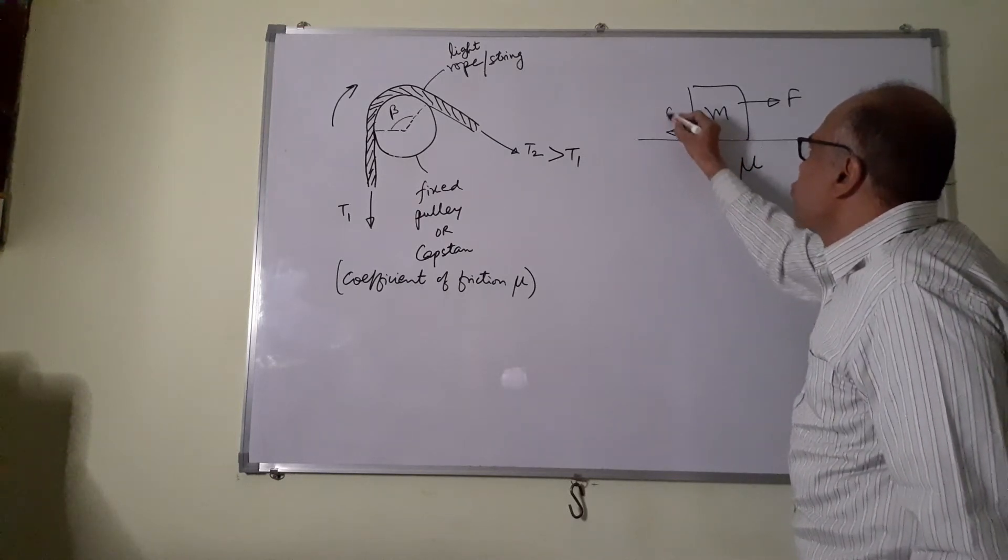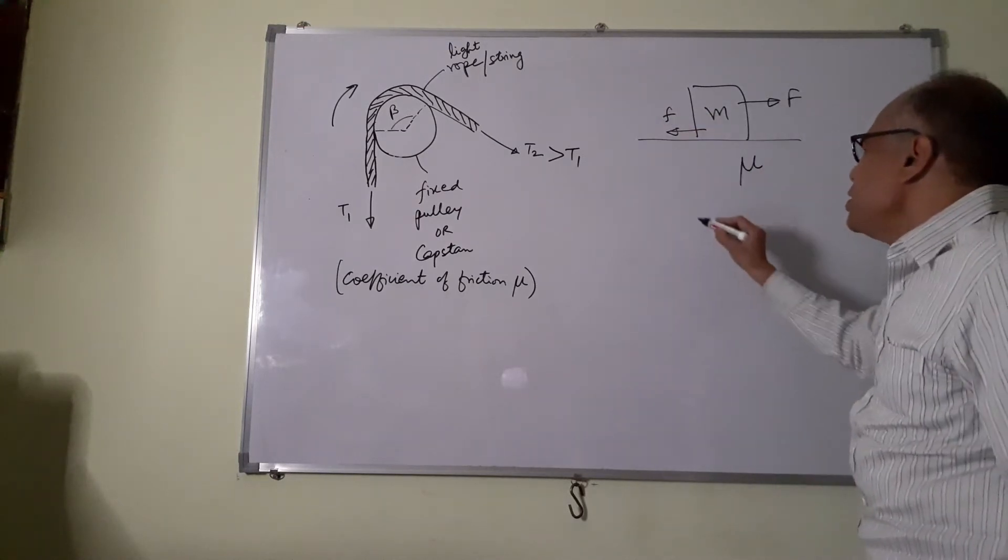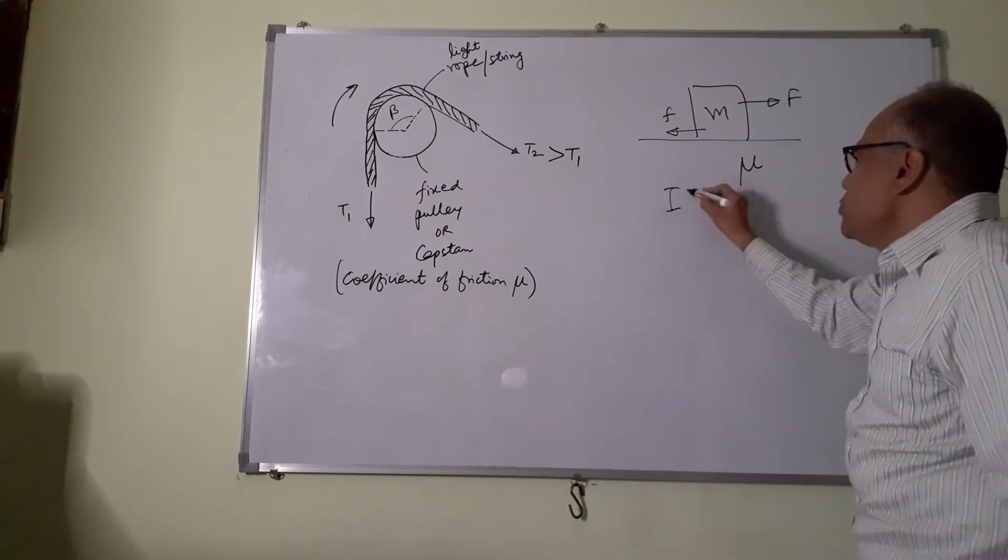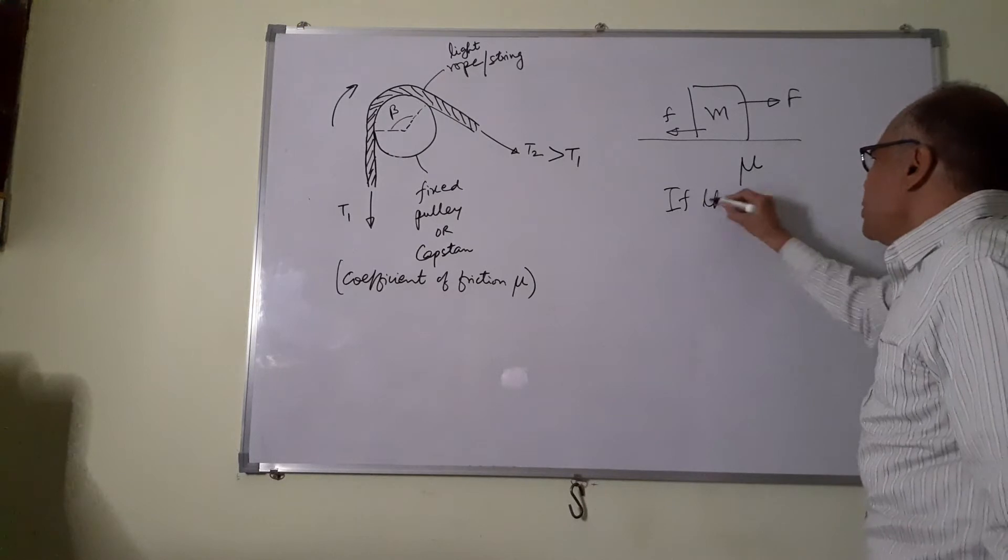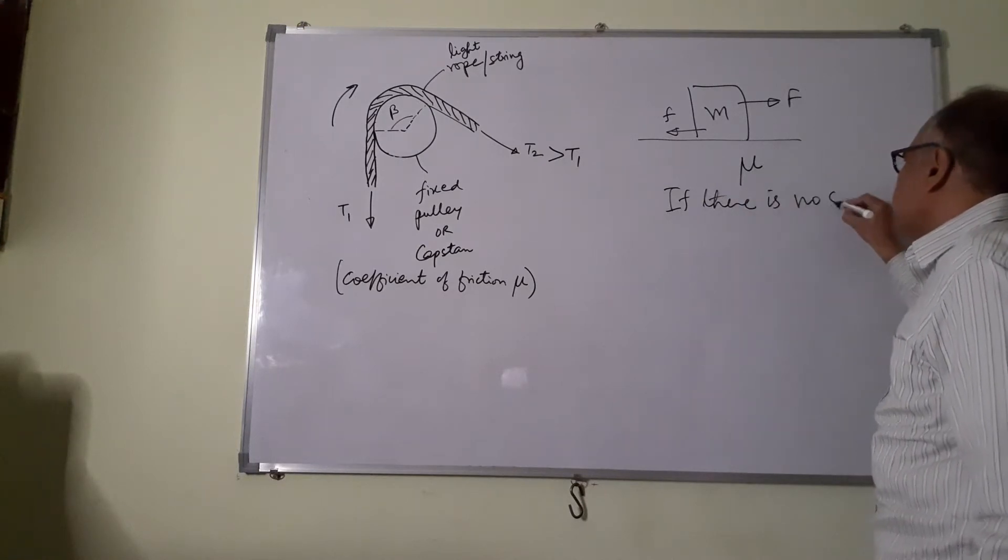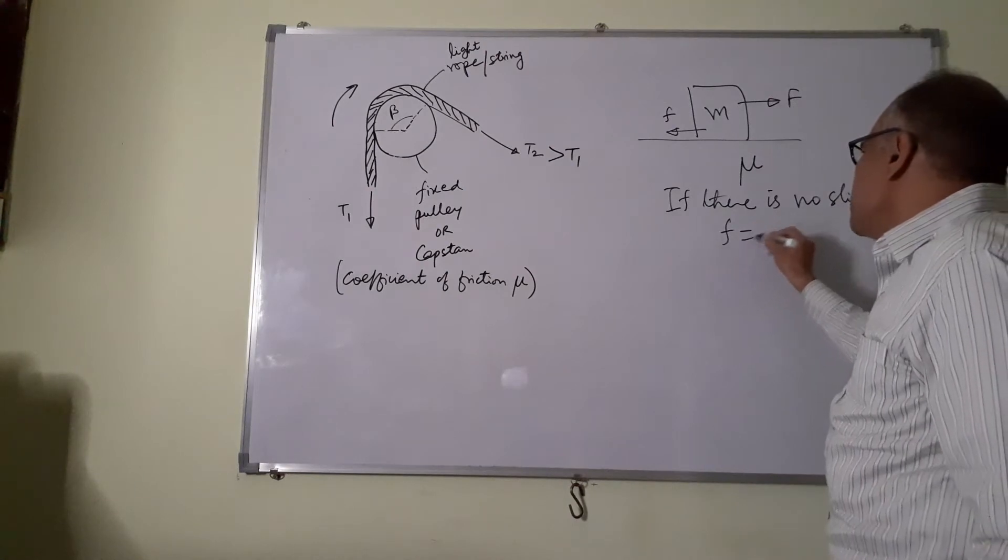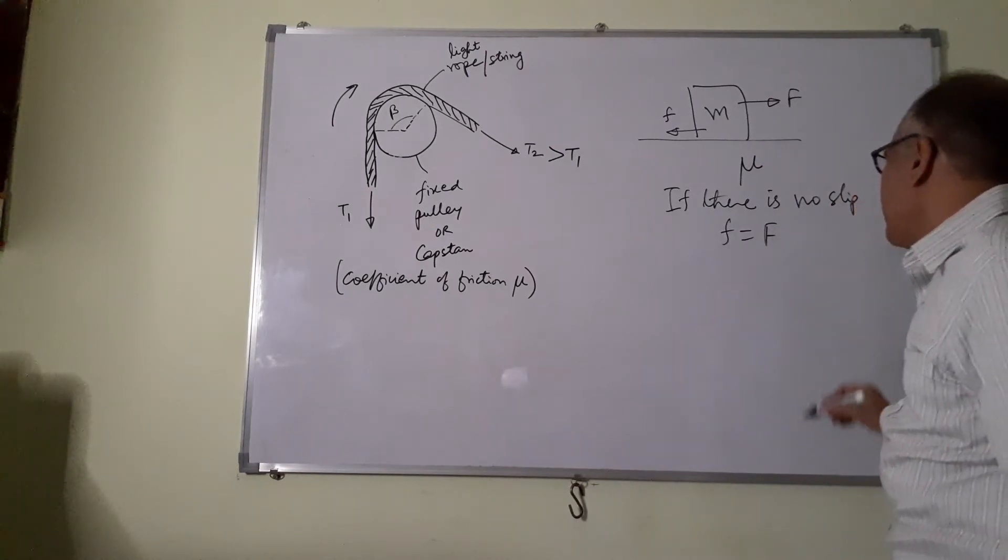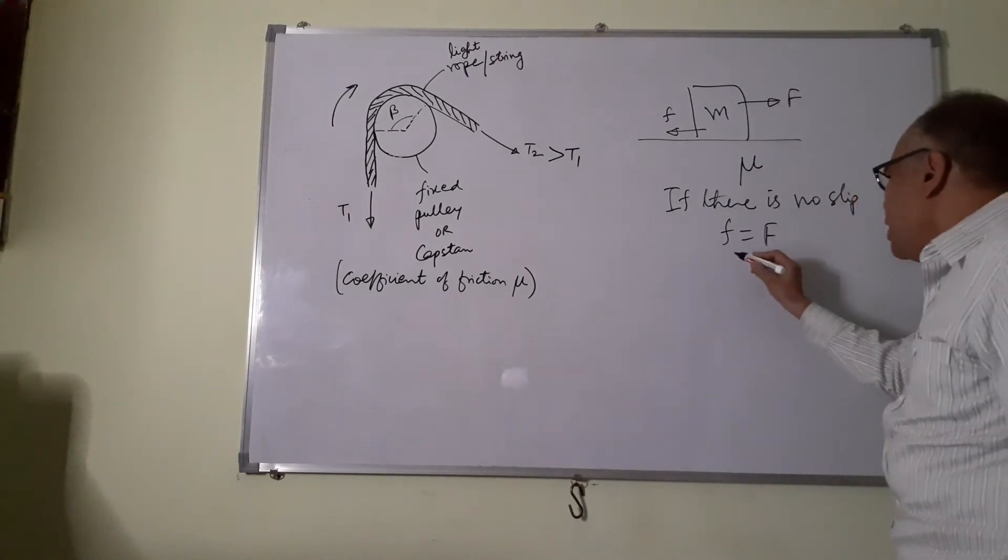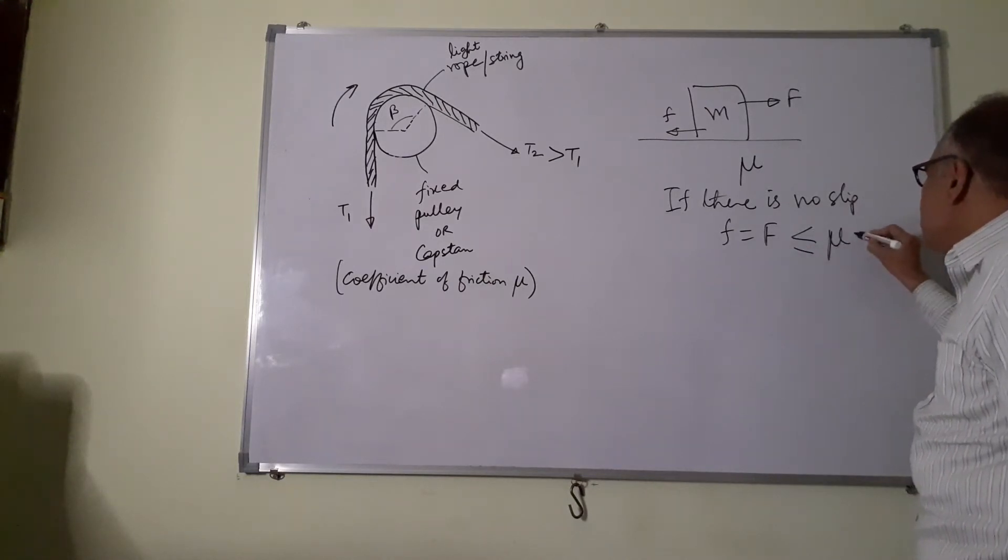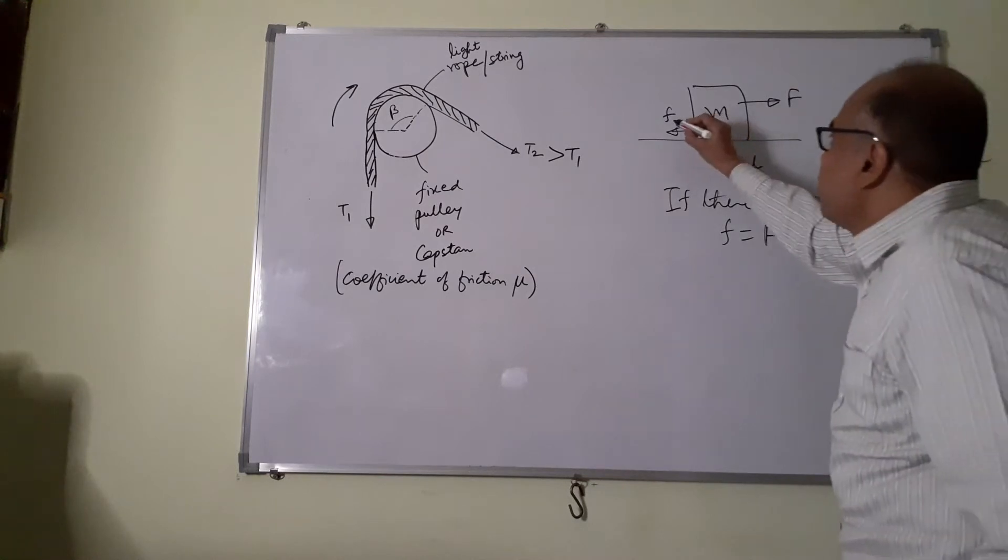This is a rough surface and we apply a small force F. Obviously there will be a friction force, and if there is no slip, what can we say? F must be equal to F and also F must be less than or equal to mu M1. I will call this as F1.